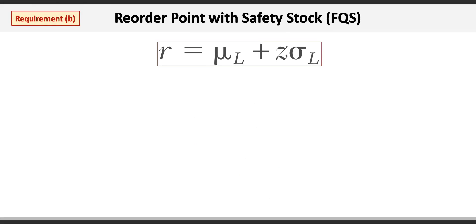The formula for the reorder point is R equals the mean lead time demand, which is mu, plus Z times the standard deviation or sigma during the lead time.